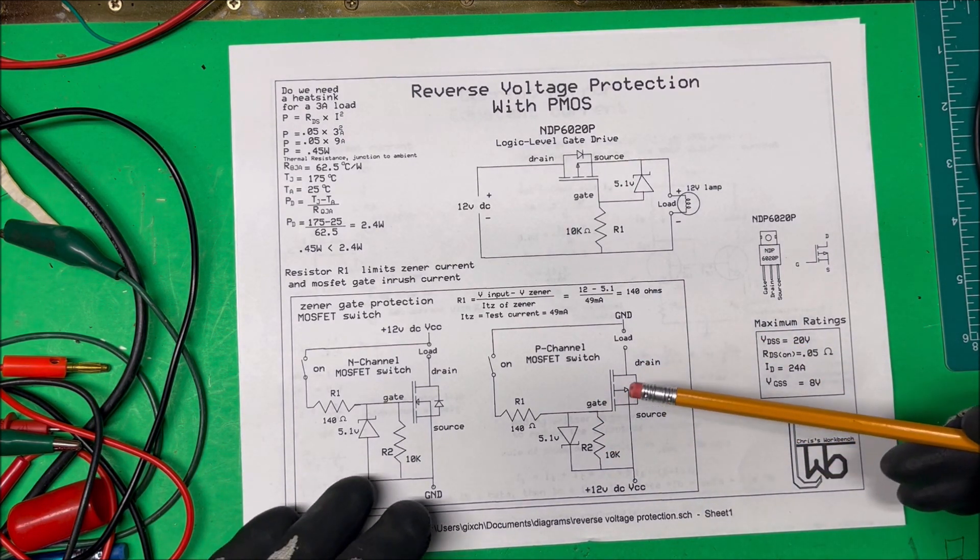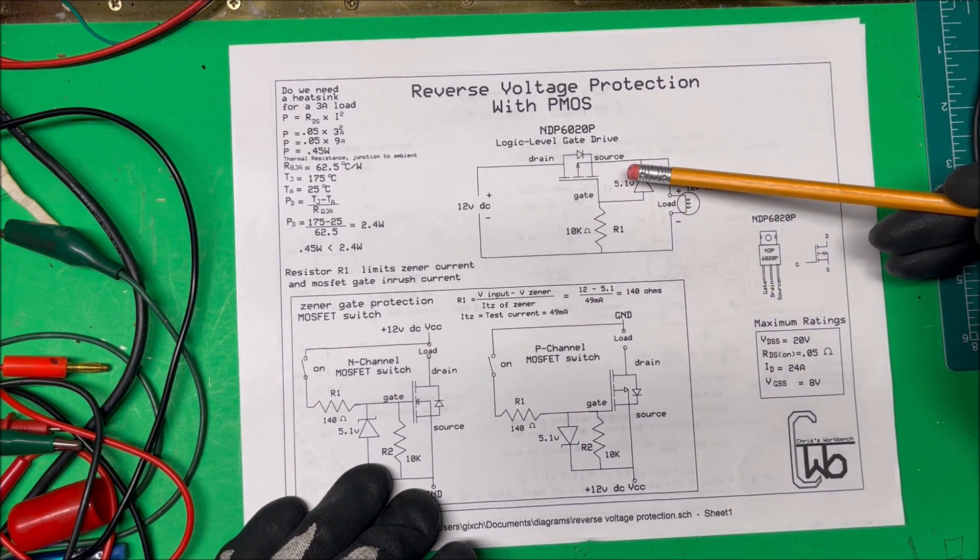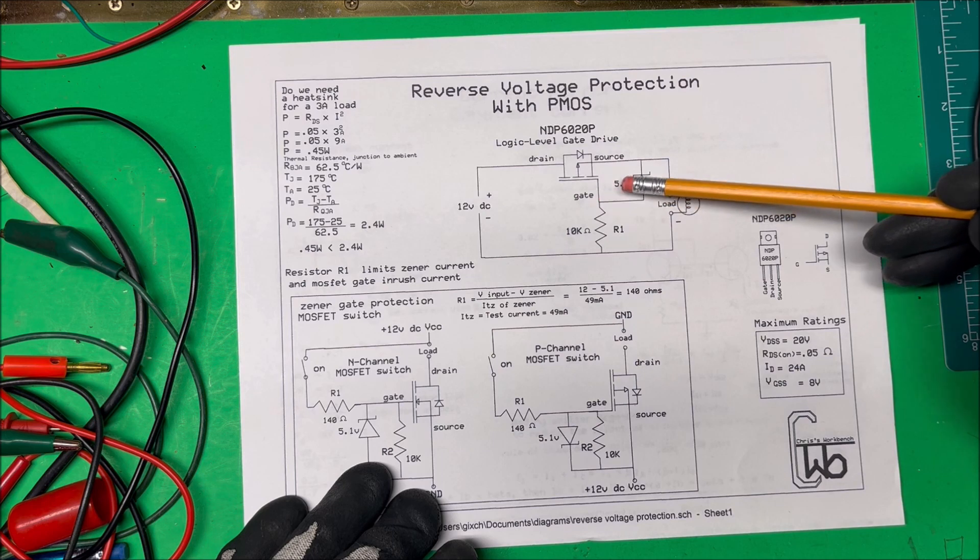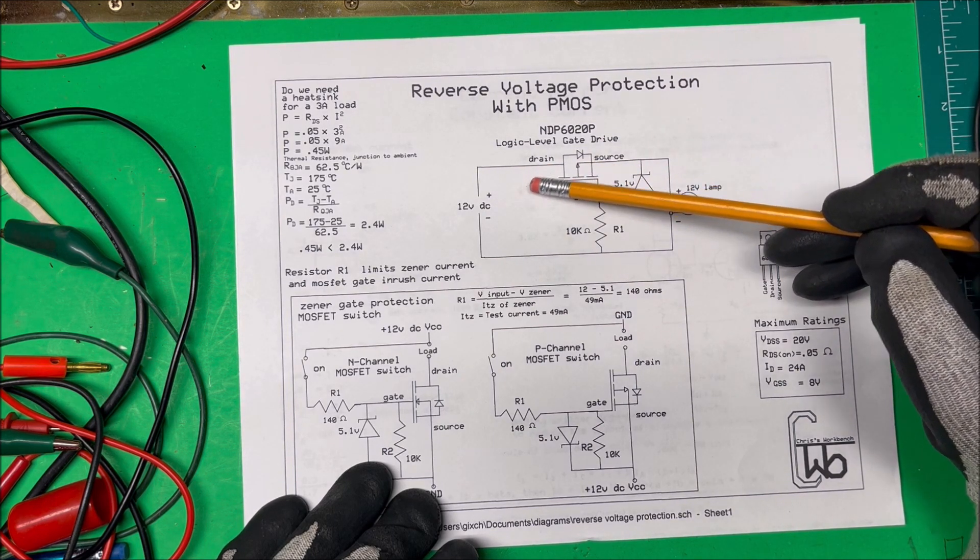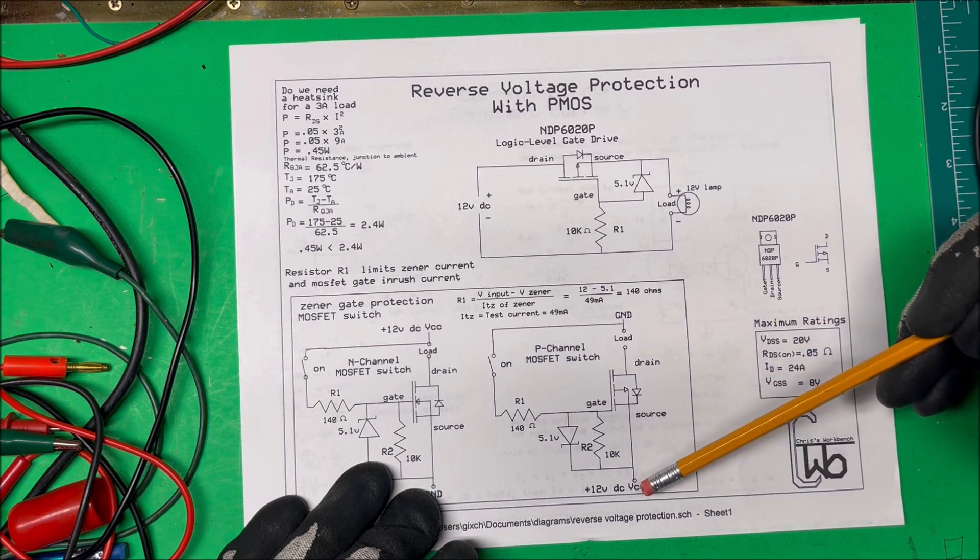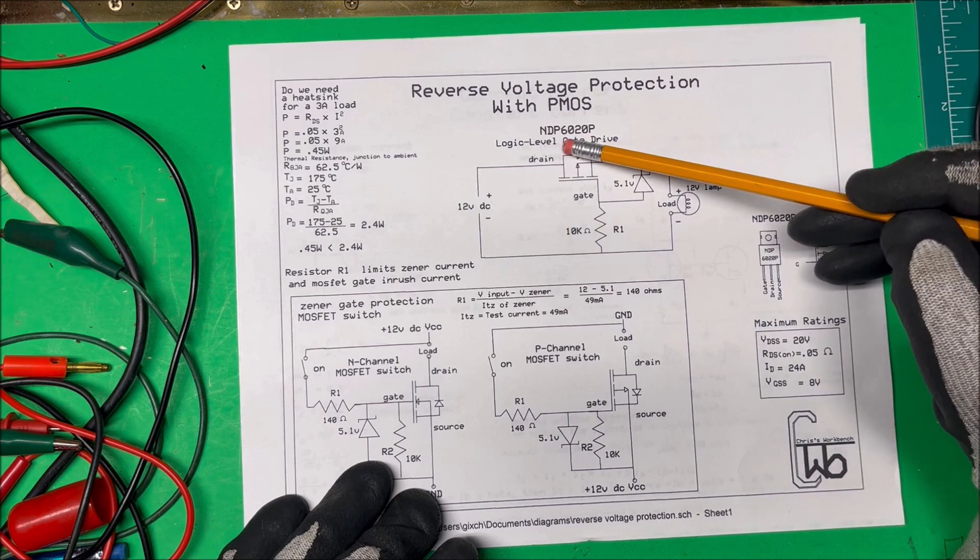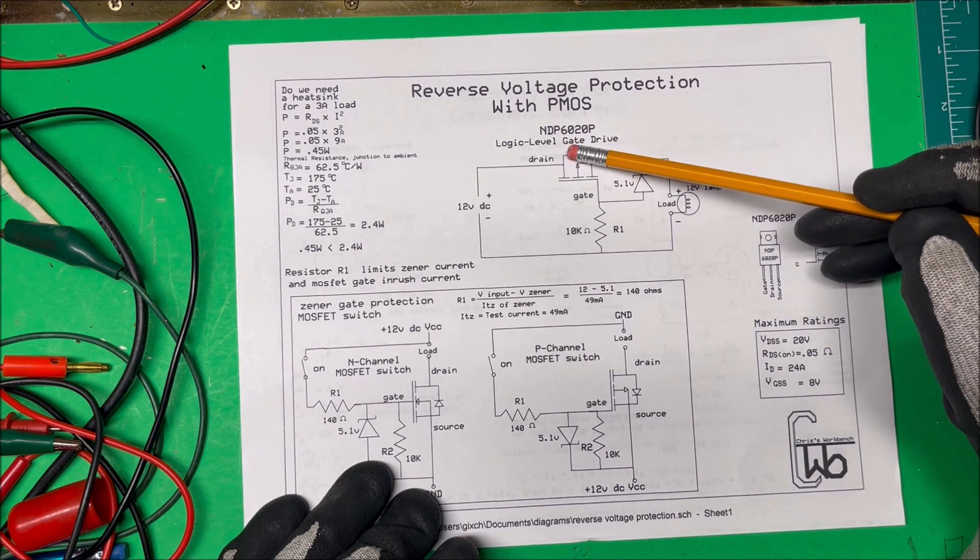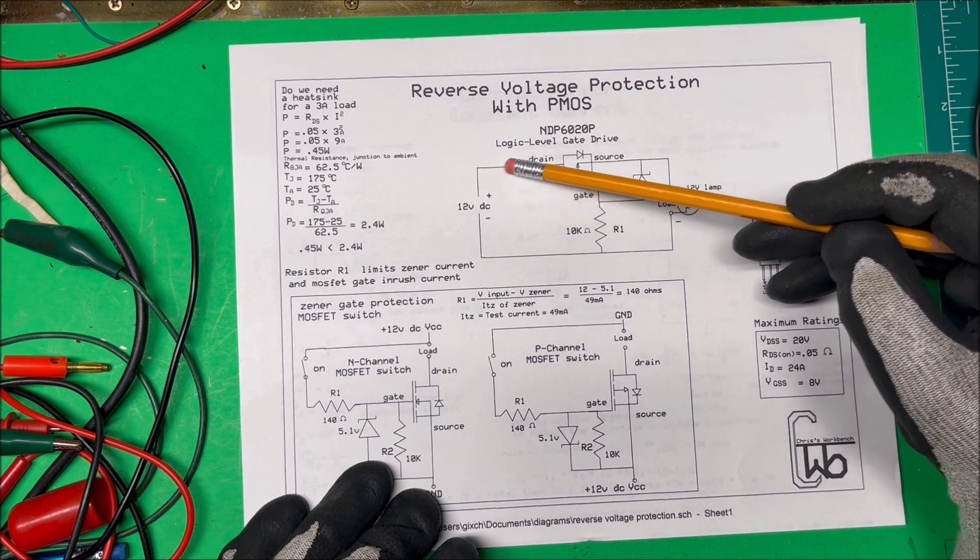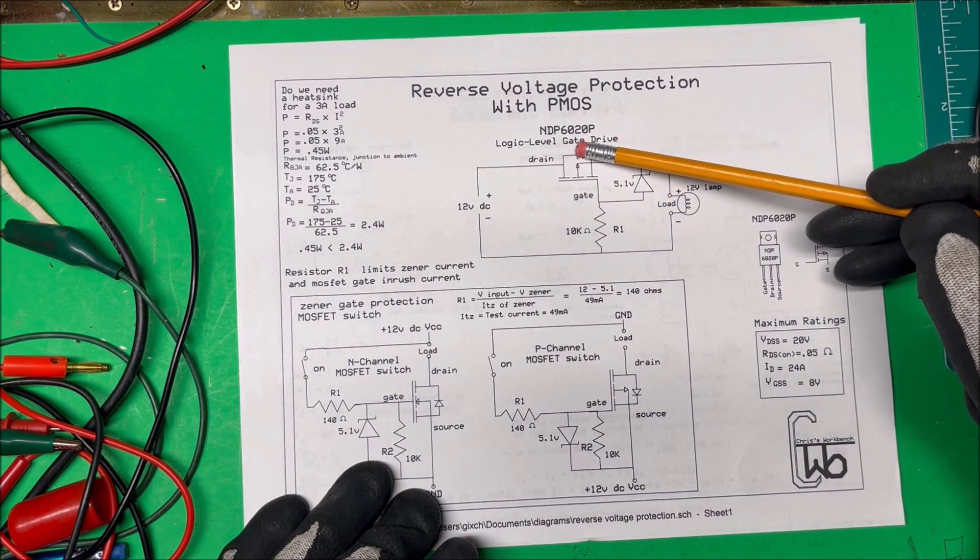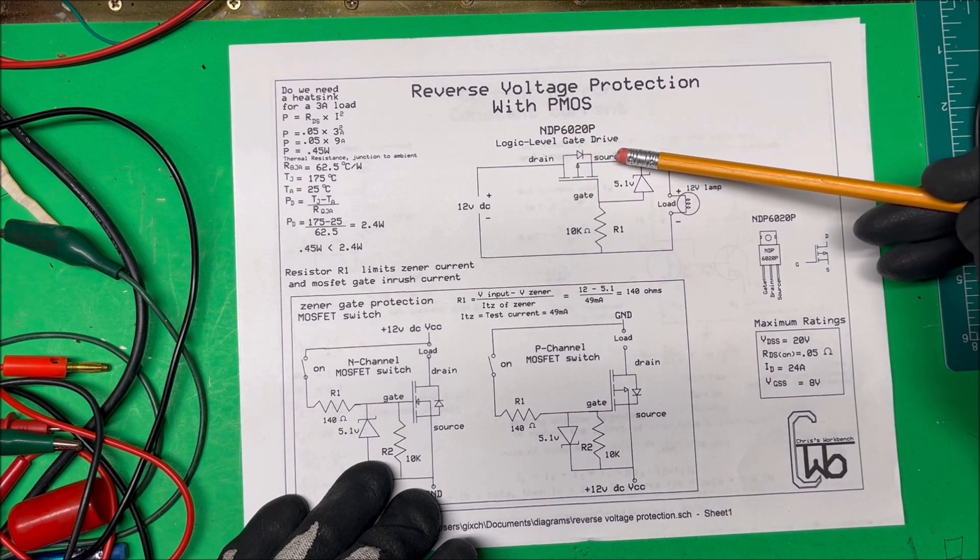Now on this reverse voltage protection up here, instead of having the source positive, we're going to take the drain and make that positive here, because there's an internal diode in that MOSFET and it needs to be in this direction. So positive voltage is going to come through—this is off, but it's going to come through the diode.